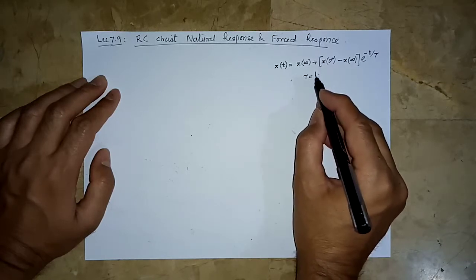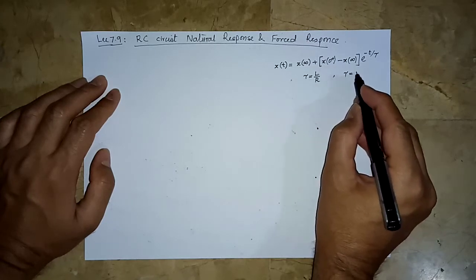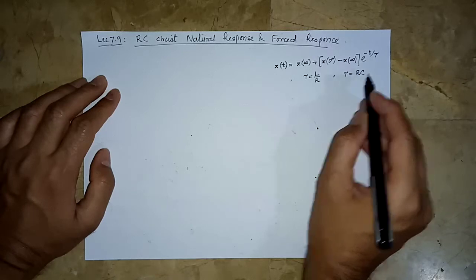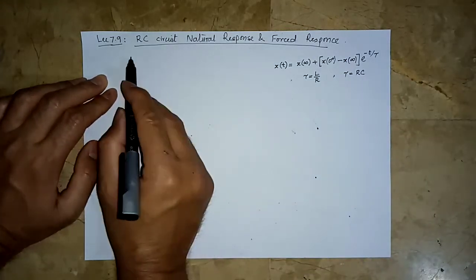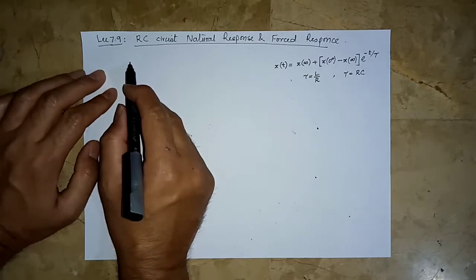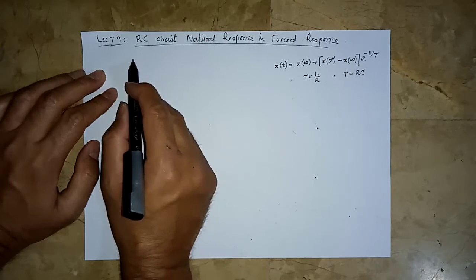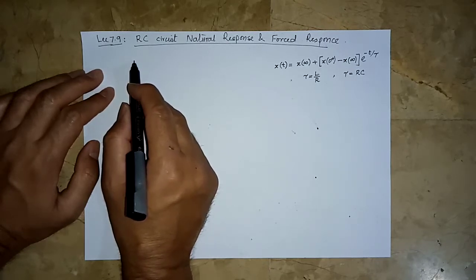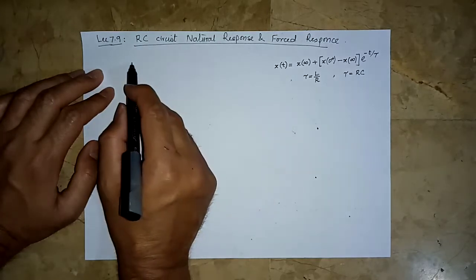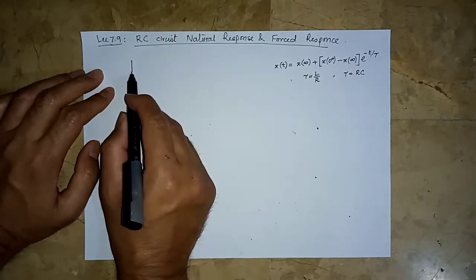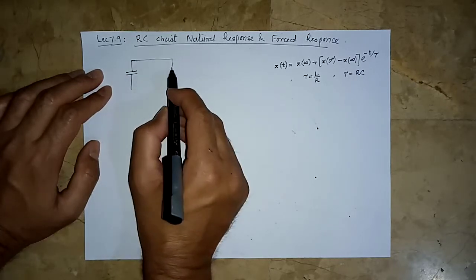Tau describes the nature of the circuit. For an RL circuit it will be L over R, and for an RC circuit it is RC. So if we now have a circuit we have not studied, let us try to apply this general solution directly, instead of solving it the way we handled the RL circuit. Now we have a capacitor that is initially charged.